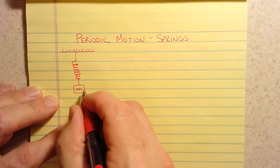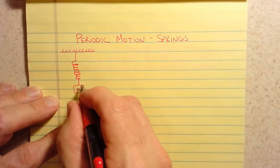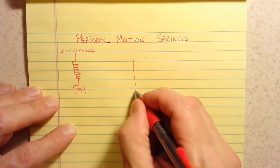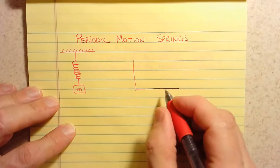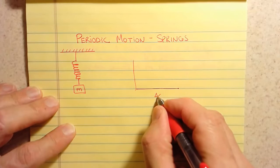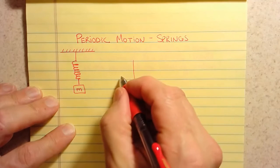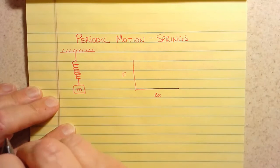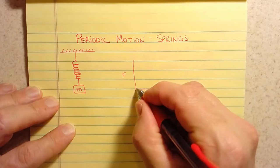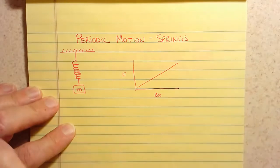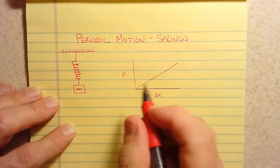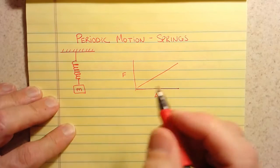So as you guys noticed in lab, the more weight you put on the spring, the farther it stretched. And so if we were to look at the relationship, for example, between how much we stretch a spring, which we call delta x, and the force that the spring exerts, that turns out to be a linear relationship, and that's what you guys found in lab. The more force you put on, the more the spring stretched.